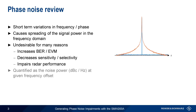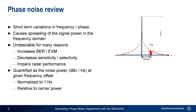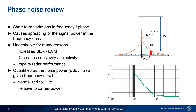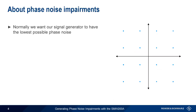We quantify phase noise as the noise power at a given carrier offset. The noise power is normalized to a 1 Hz bandwidth and calculated relative to the carrier power, so the result is in units of dBc per Hz at a given offset. Often, phase noise is plotted as so-called single sideband noise on a log scale, with points on the trace corresponding to phase noise at different frequency offsets. Normally, it's very important to minimize the phase noise in our signal generator to produce the cleanest possible signals.